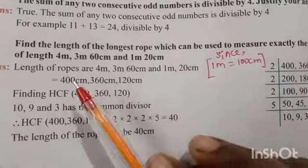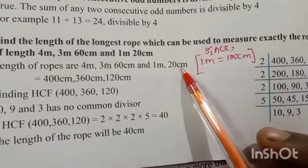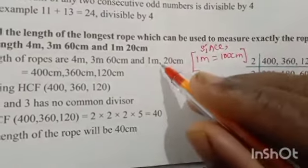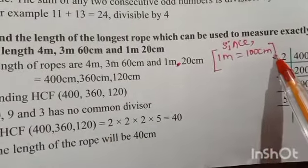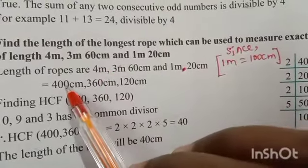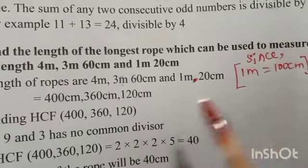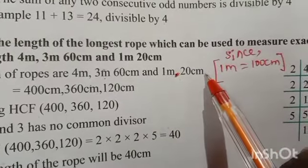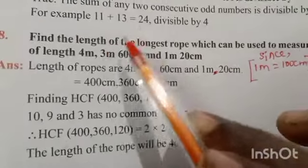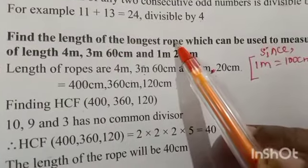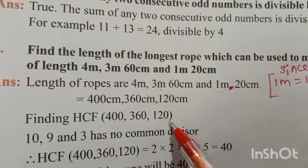The lengths of the ropes are 4 meter, 3 meter 60 centimeter, and 1 meter 20 centimeter. Convert all to centimeters: 1 meter equals 100 centimeter, so 4 meters equals 400 centimeter; 3 meter 60 centimeter equals 360 centimeter; 1 meter 20 centimeter equals 120 centimeter. So we have to find HCF of 400, 360, and 120.